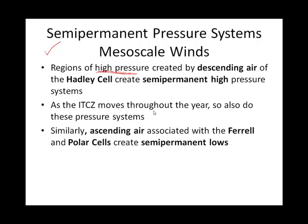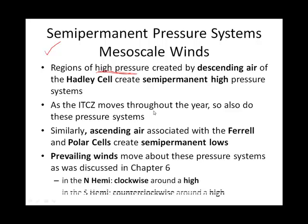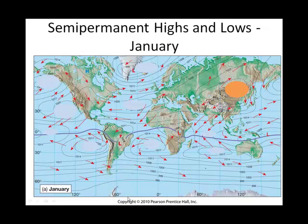These semi-permanent high pressures are actually where the Hadley cell meets the Ferrel cell in both hemispheres. If we look at a high in the northern hemisphere, we would expect air to be going clockwise — we call that anticyclonic. In the southern hemisphere, because of Coriolis deflection, around a high it also goes anticyclonic, but it will be counterclockwise.